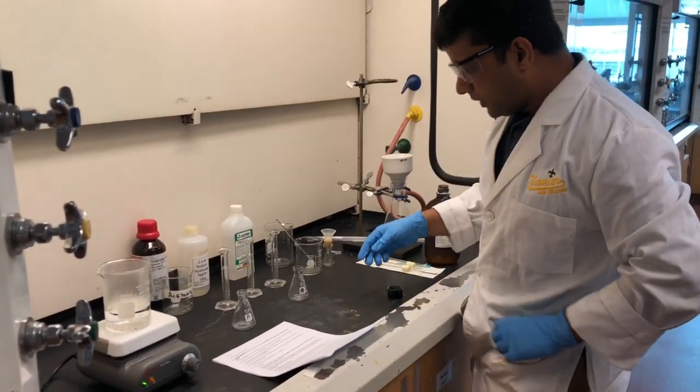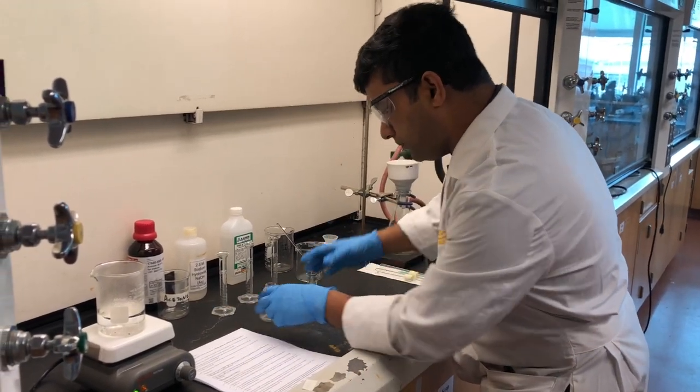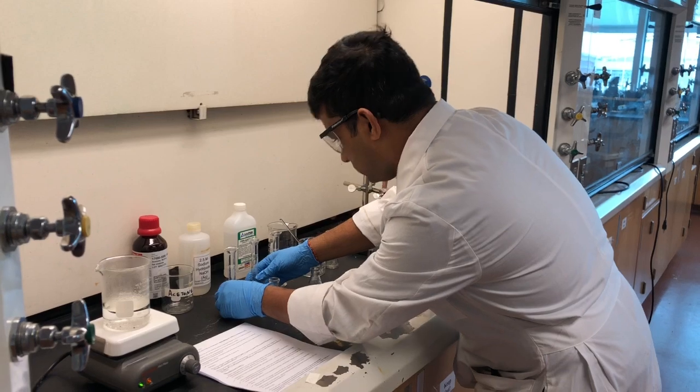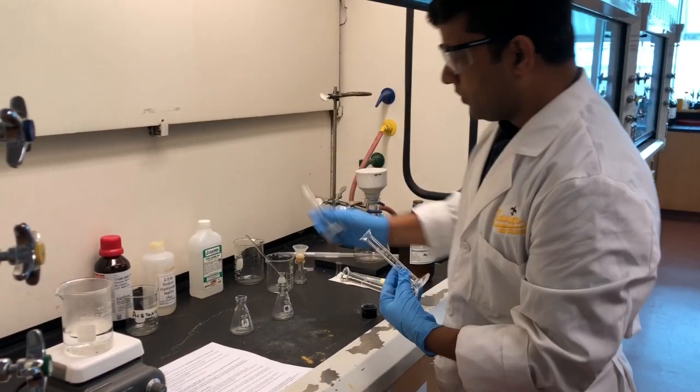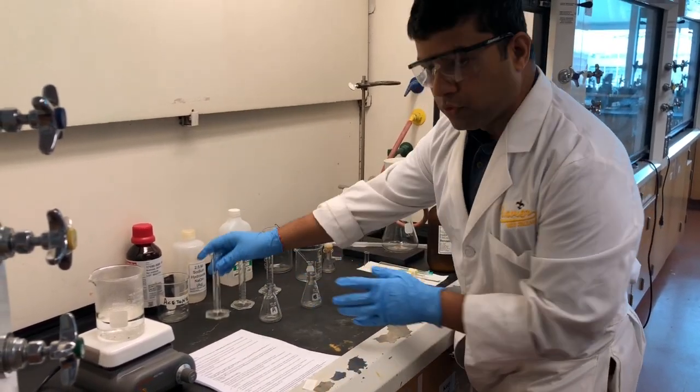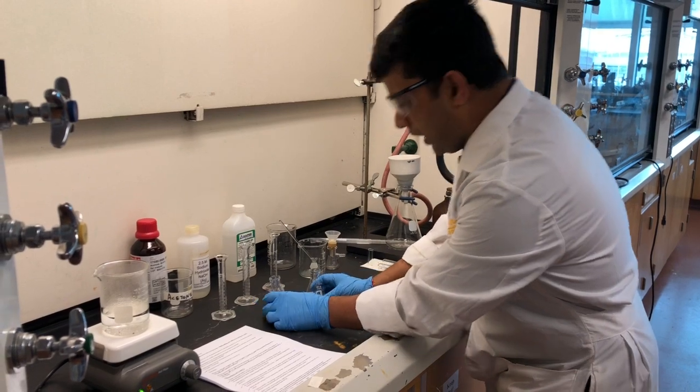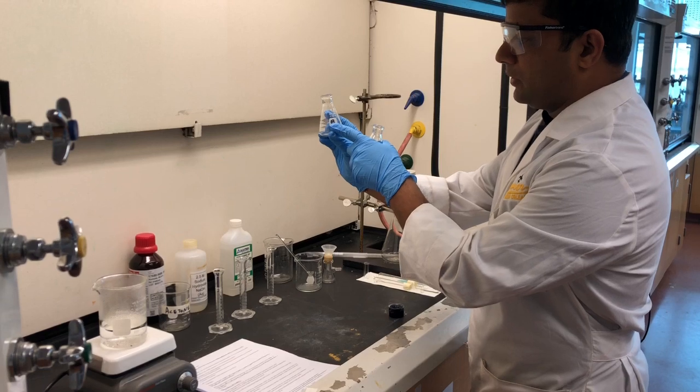Before we start the reaction, we need to prepare all the necessary glassware. We are going to have three graduated cylinders, one for sodium hydroxide, one for ethanol and one for ethyl acetate later on. We will have two aluminaire flasks. We will label them as A and B.